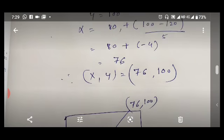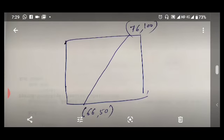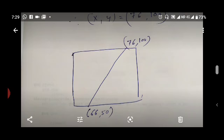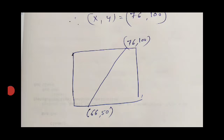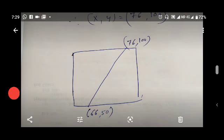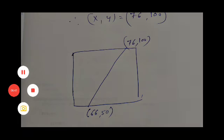Now both intersection points have been found. The line will be clipped from point (66,50) to point (76,100), which is the portion interior to the clipping window. If you find the region codes for both these points, you will get 0000 for both, confirming they are interior to the clipping window. This is how the Cohen-Sutherland line clipping algorithm works.